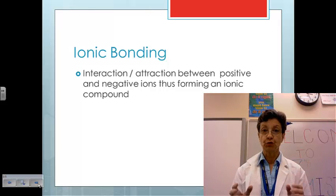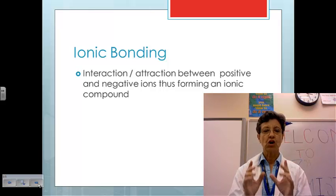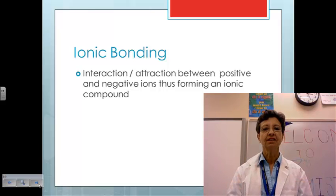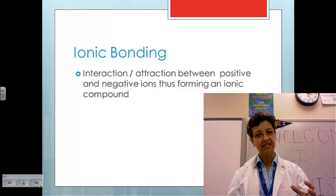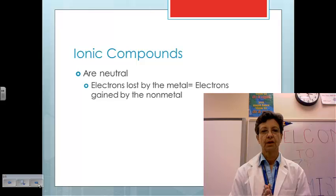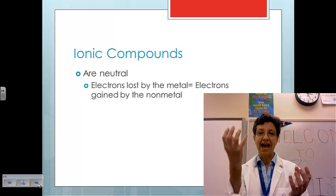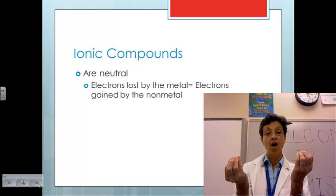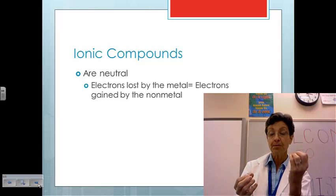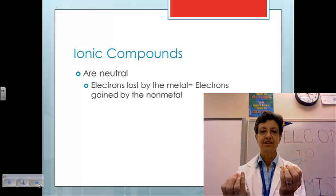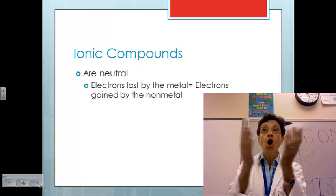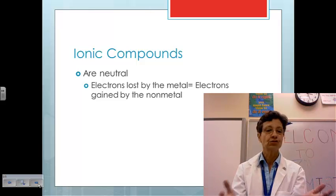There are a few exceptions to the rule that I just told you. However, let's talk about ionic bonding. What does it mean? It's the interaction or attraction between a positive and a negative ion, thus forming an ionic compound. Ionic compounds, even though the atoms making up the ionic compounds are charged, they are neutral, because the electrons lost by the metal are gained by the non-metal. They equal out. They equal out in charge. They become neutral. All compounds are neutral. And ionic compounds are no exception.